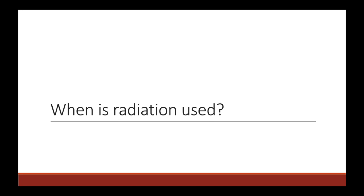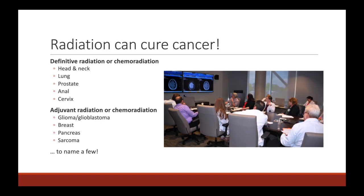In a lot of cases, radiation can actually be used to cure cancer, assuming the patient's stage is such that cure is an option and the patient has good enough performance status to tolerate this type of therapy. Definitive radiation, or a combination of chemotherapy and radiation, can be used to cure cancers in the head and neck region, lung cancer, prostate cancer, anal cancer, and cervical cancer, among others. We can also utilize radiation in the adjuvant setting or with concurrent chemotherapy to try to cure other cancers including glioma, breast cancer, pancreas cancer, and sarcoma, just to name a few.